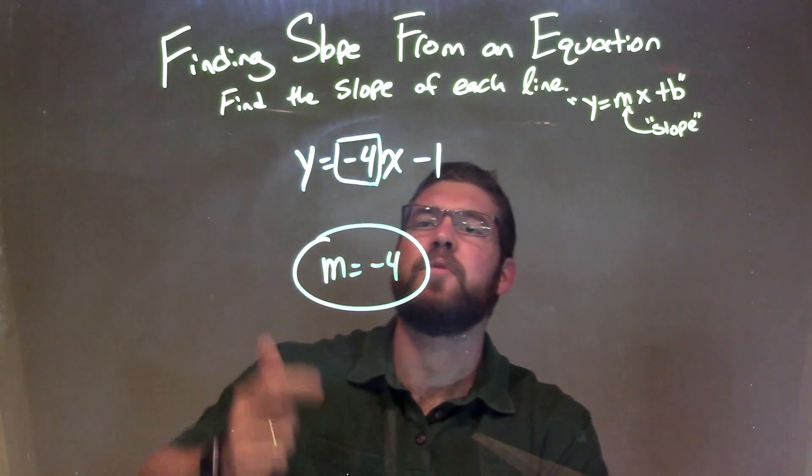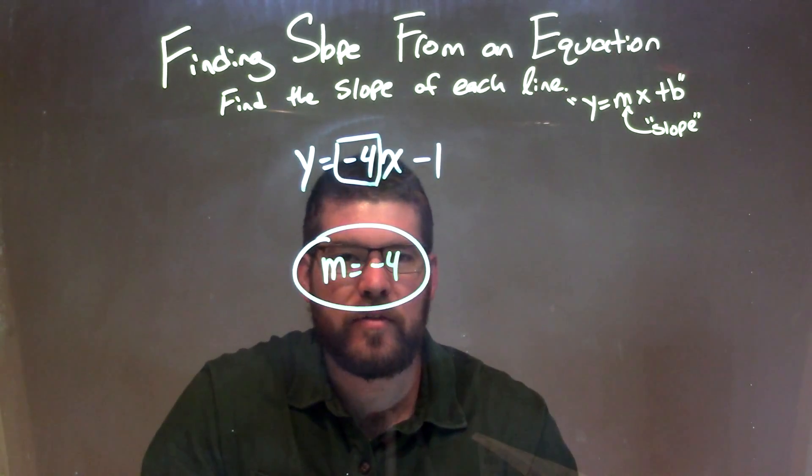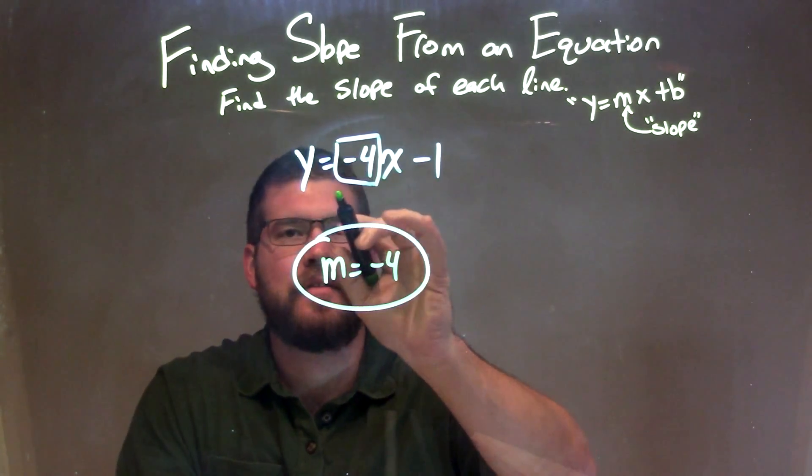And that's it. So let's recap. We're given y equals negative 4x minus 1. We need to identify the slope here. Well, it's already in slope-intercept form, which I can see.